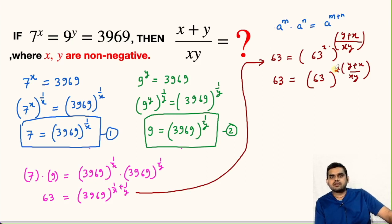Now let us compare the powers of 63 on both sides. So here it is 1 on left hand side, on right hand side it is twice (y+x)/xy. So from here we can write 1 = twice (y+x)/xy.